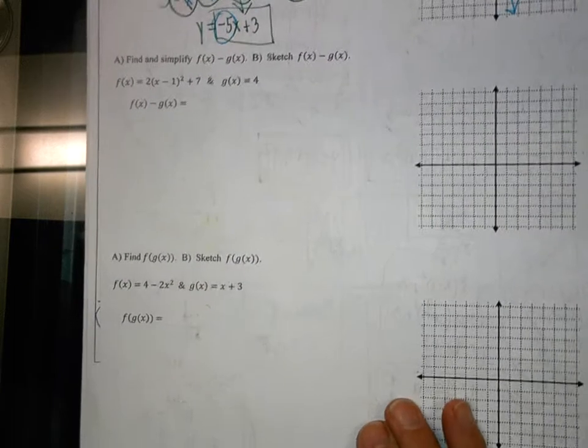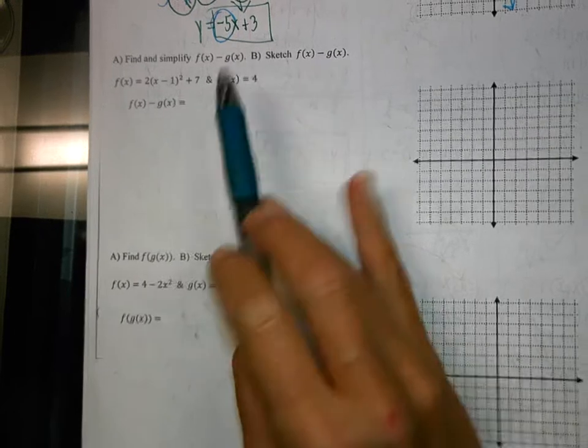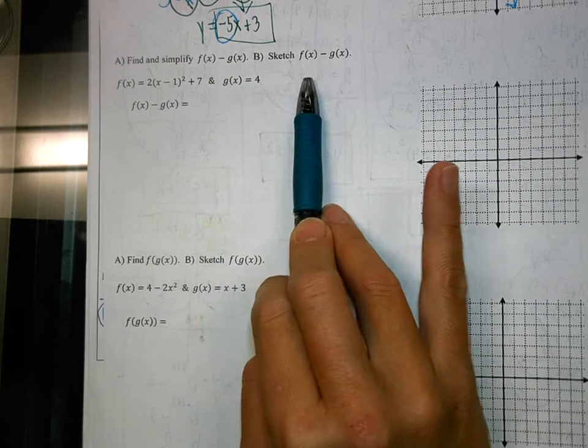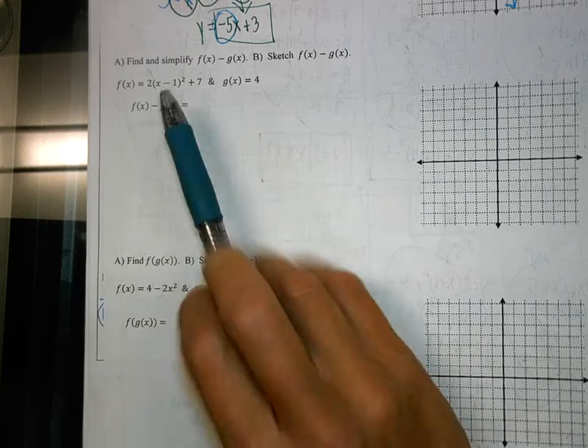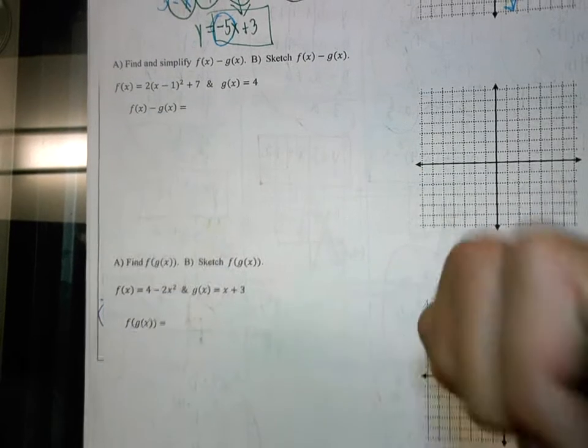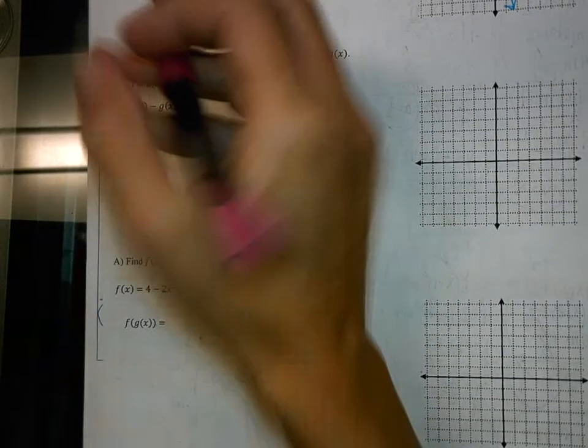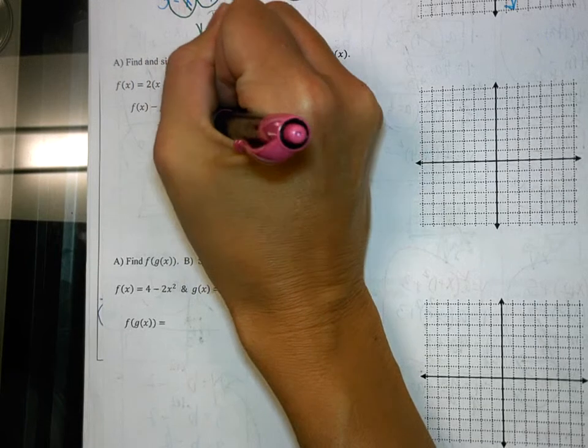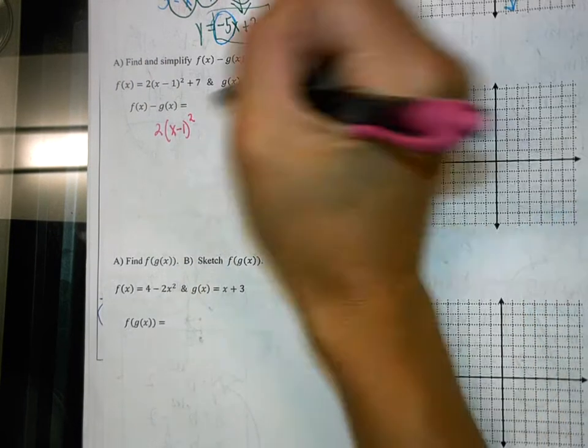So on this one, it says find and simplify f of x minus g of x, and then to sketch that function. So, f of x minus g of x, we're going to write this out, and we have two parentheses, x minus 1 squared, plus 7,